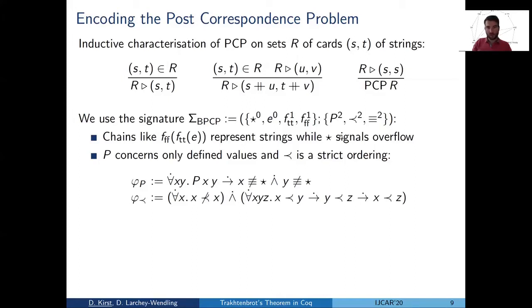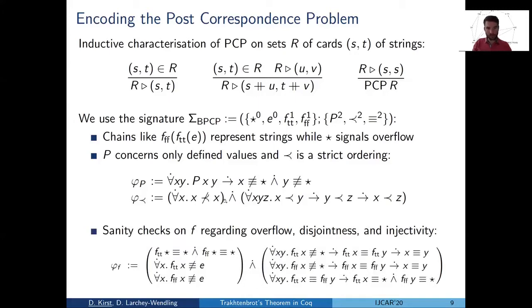And then we need formulas enforcing that the relation symbols are interpreted correctly. So at least the sanity condition on P is that it applies only to well-defined values. And the ordering should be indeed a strict ordering. And then there are also some sanity checks for F regarding overflow, disjointness, and injectivity.